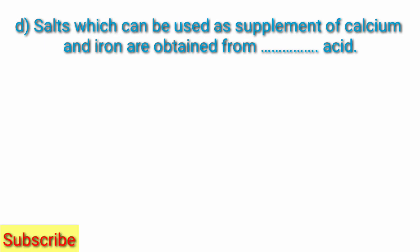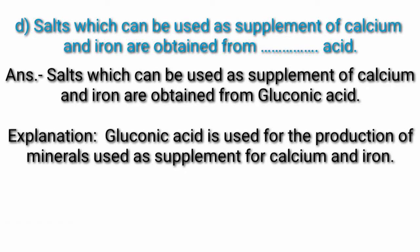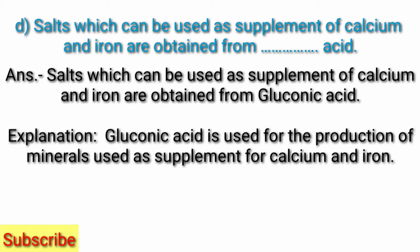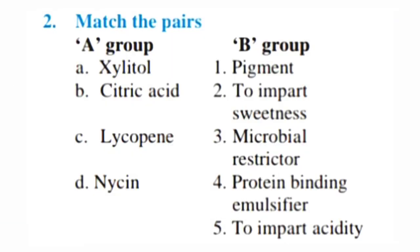Question D. Salts which can be used as supplement of calcium and iron are obtained from fill-in-the-blank acid. Answer: Salts which can be used as supplement of calcium and iron are obtained from gluconic acid. Explanation: Gluconic acid is used for the production of minerals used as supplement for calcium and iron.